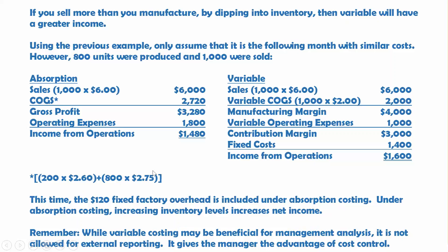Total cost of goods sold is $2,720. Gross profit $3,280. Operating expenses $1,800, giving income from operations of $1,480. Under variable, sales don't change. Variable cost of goods sold is 1,000 units times $2, so manufacturing margin is $4,000. Variable operating expenses are $1,000 — 1,000 units times a dollar per unit. Contribution margin is $3,000. Total fixed costs remain $1,400, giving income from operations of $1,600. So variable income is $120 higher because that $120 in fixed costs carried in inventory last month already came out then when those units were manufactured.